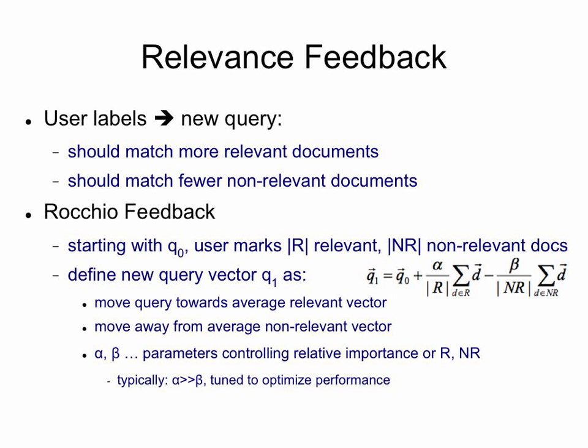In general, suppose we're starting with a query Q0. From the result list, the user selects some relevant documents and some non-relevant documents. Those are your labels.